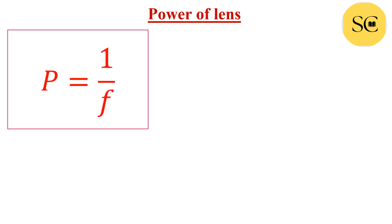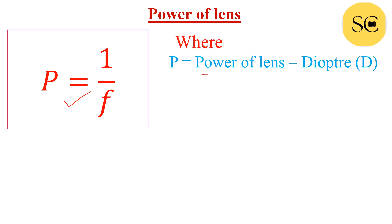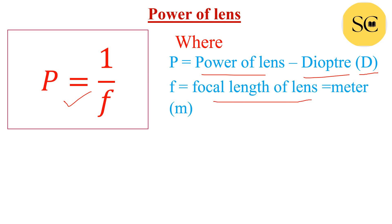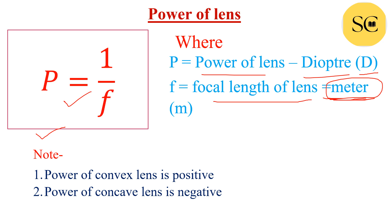Power of lens: P = 1/F, where P is power of lens and unit is diopter (D in short). Focal length of lens unit is meter. In this formula, you must write the correct unit of focal length — here we use meter, not centimeter. Power of convex lens is positive because focal length of convex lens is also positive. Power of concave lens is negative because the focal length of concave lens is negative.